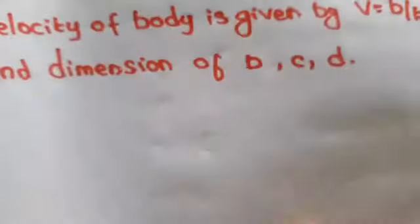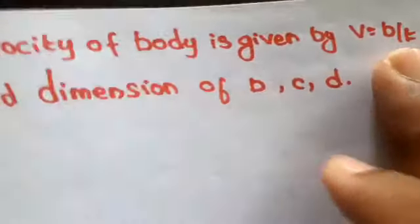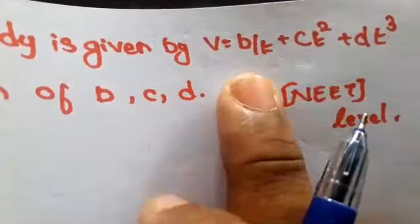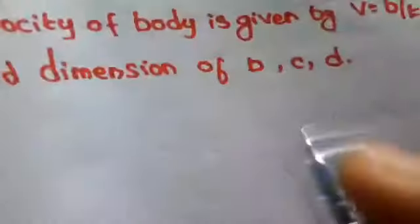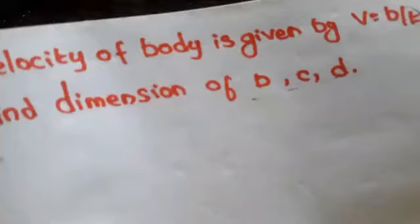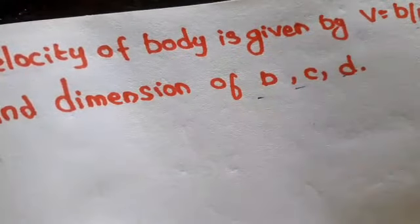See this problem. The velocity of a body is given by one equation: V equals V by T plus CT squared plus DT cubed. D are constants. The dimension of the constant is one. What will be your answer?